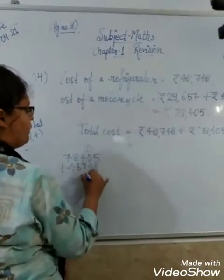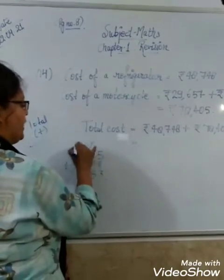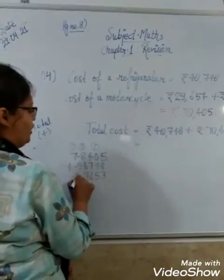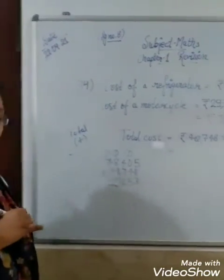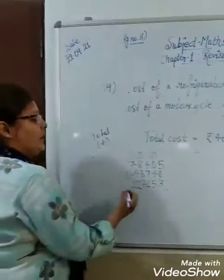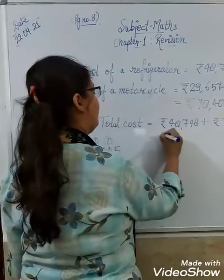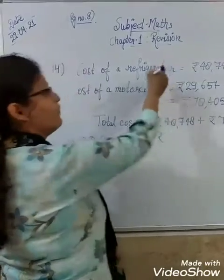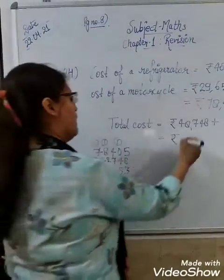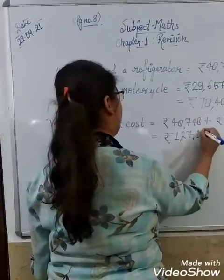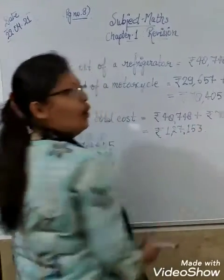So the actual answer is Rs. 1,27,153. So the actual amount for both refrigerator and motorcycle will be Rs. 1,27,153. Okay everyone?